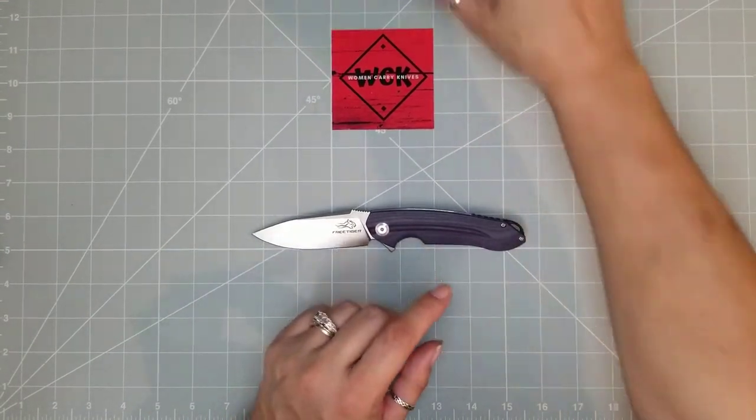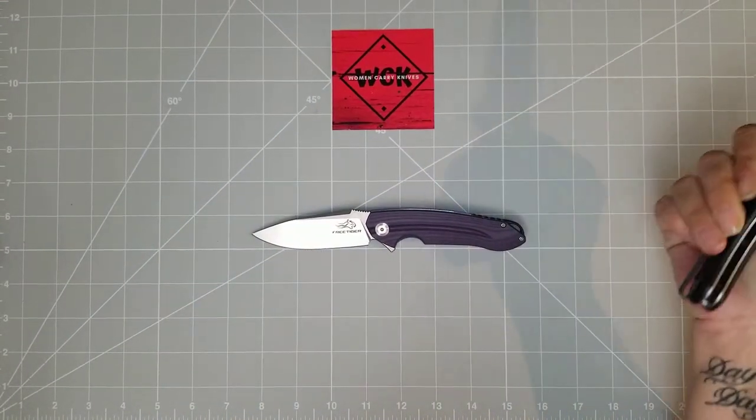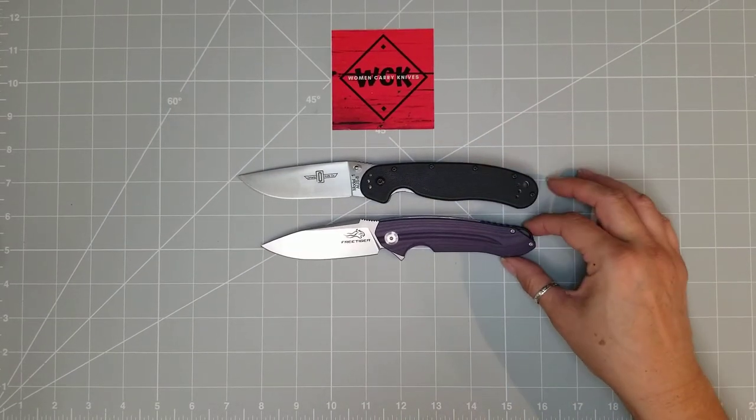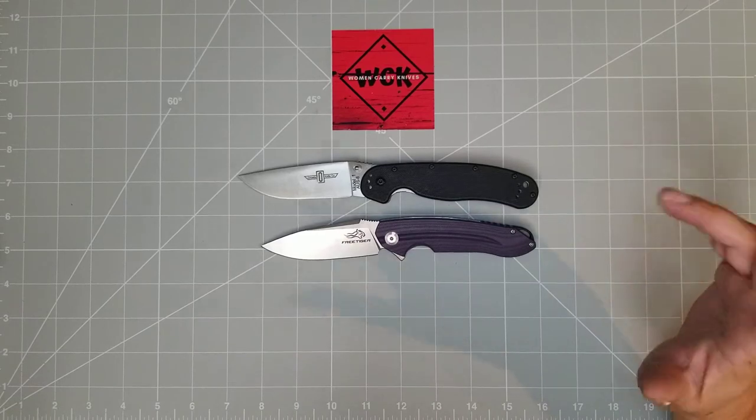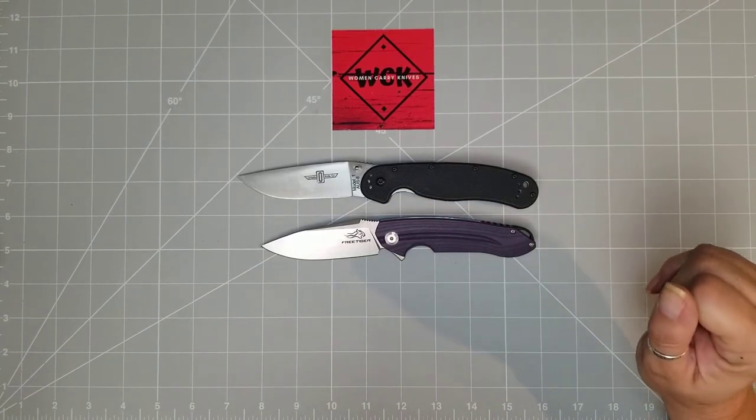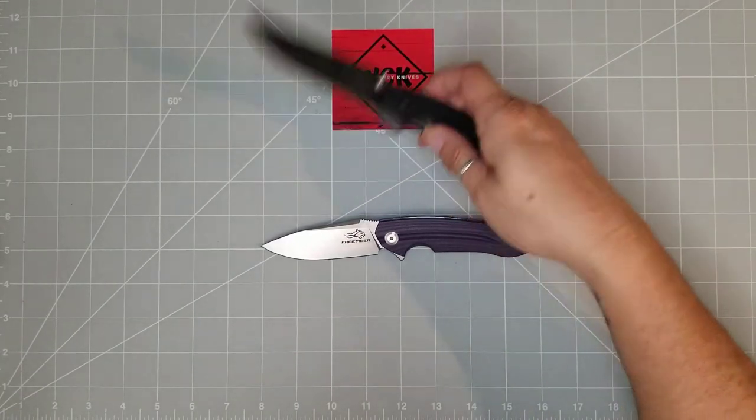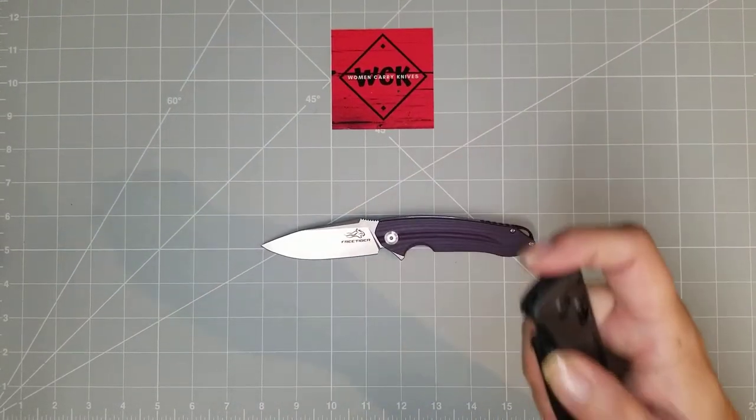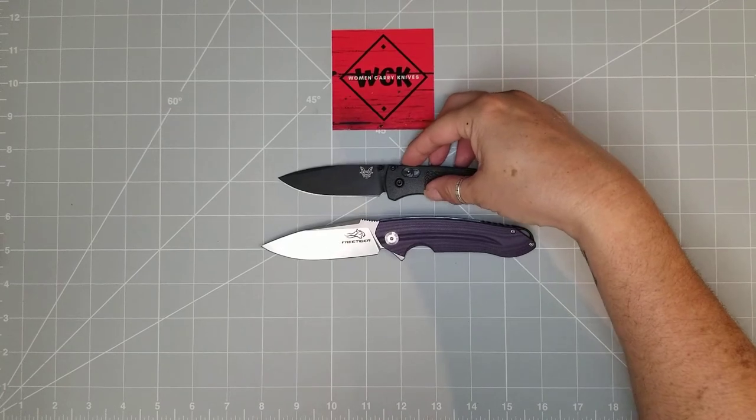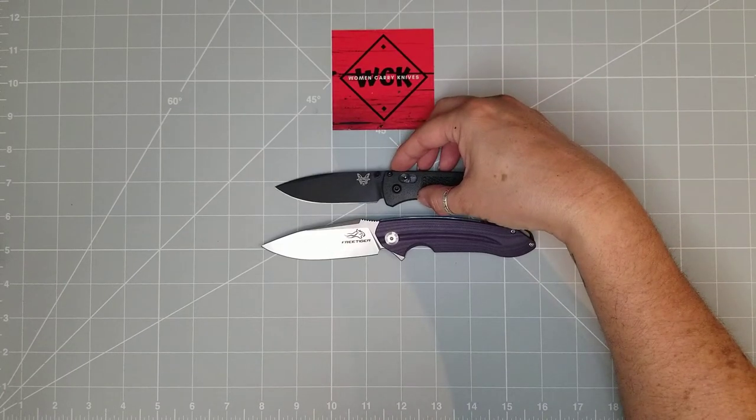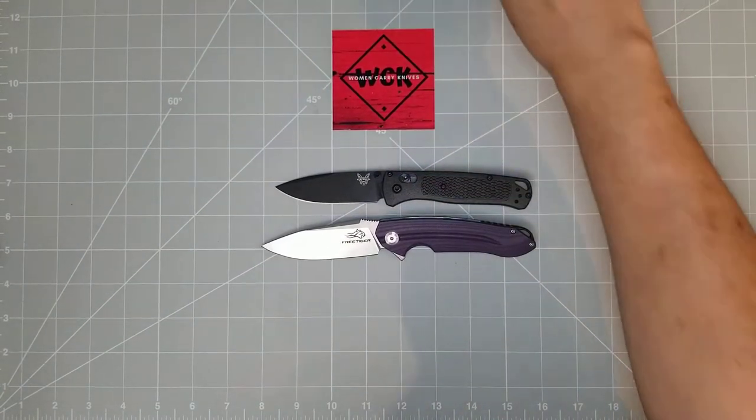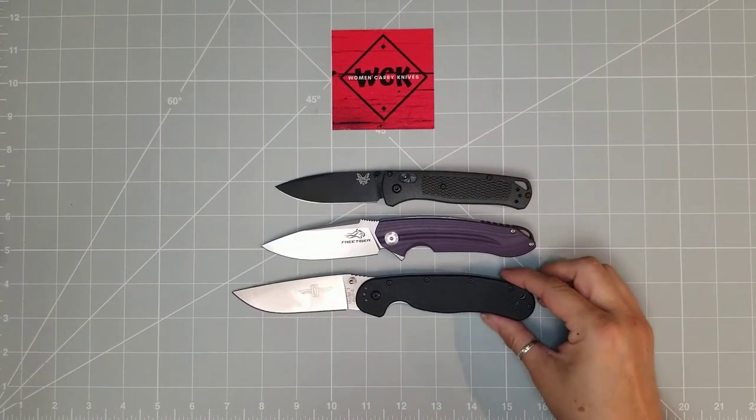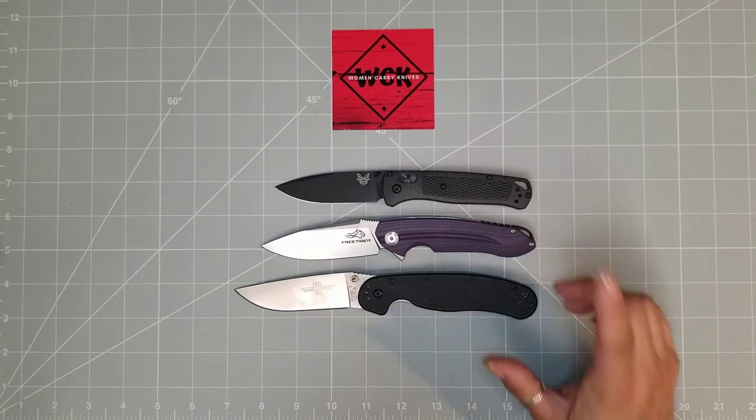Anyways, let's do a size comparison. So, if we are going to take a look at this, we are going to compare it to the rat one. So, you're looking at just maybe three quarters of an inch smaller than the rat one. Let's go ahead and take a look at this one next to the bug out.